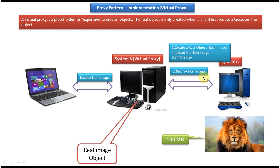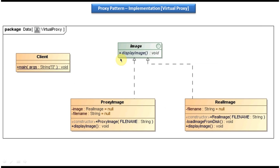We will see how we can do the class diagram of this particular scenario. This is the class diagram. At the top you can see the image interface, which has a display image abstract method. This image interface is implemented by two concrete classes: the first class is proxy image and the second class is real image. Both classes provide an implementation of the display image method from the image interface.